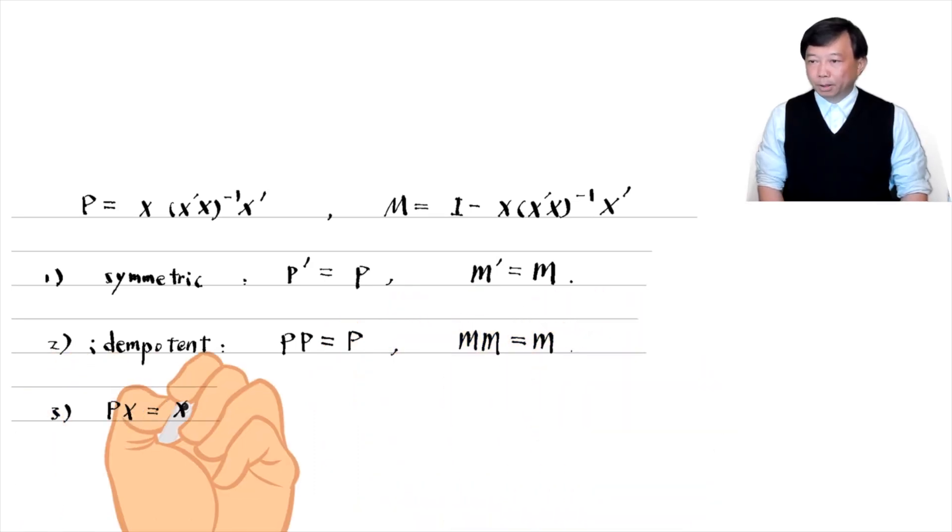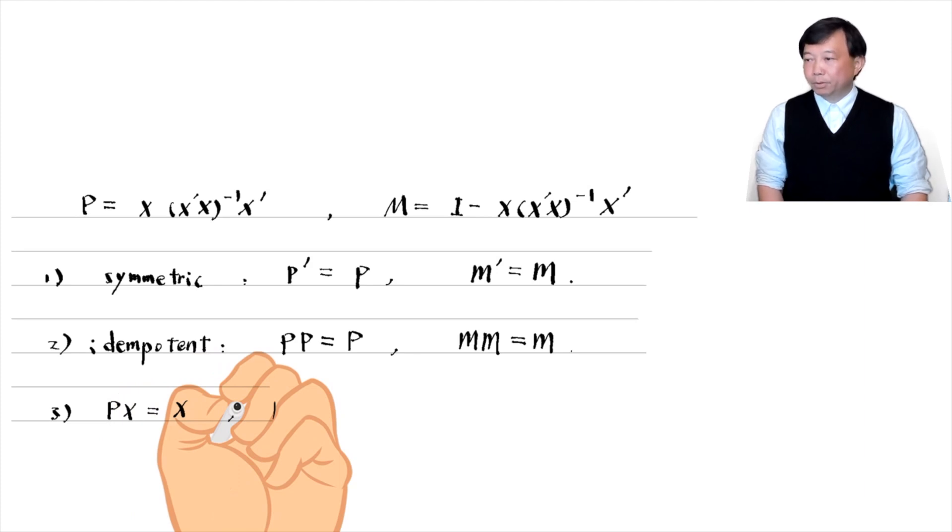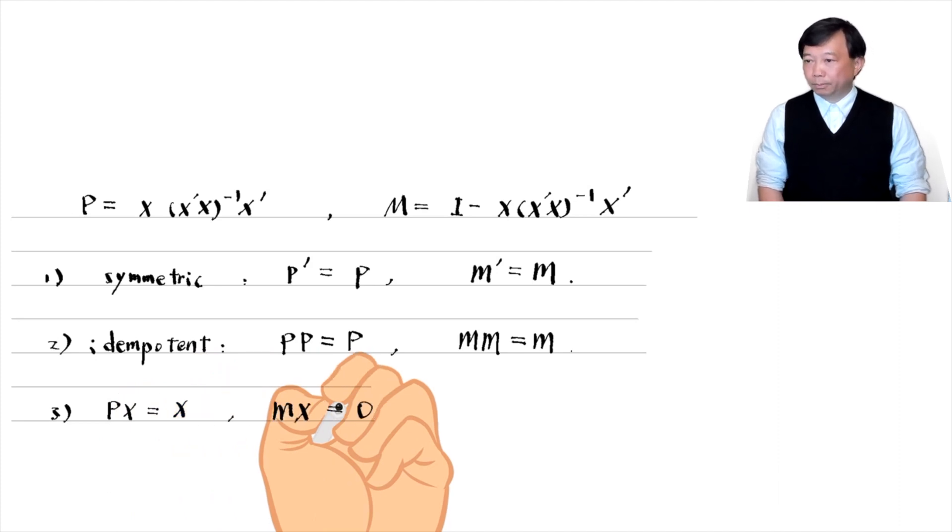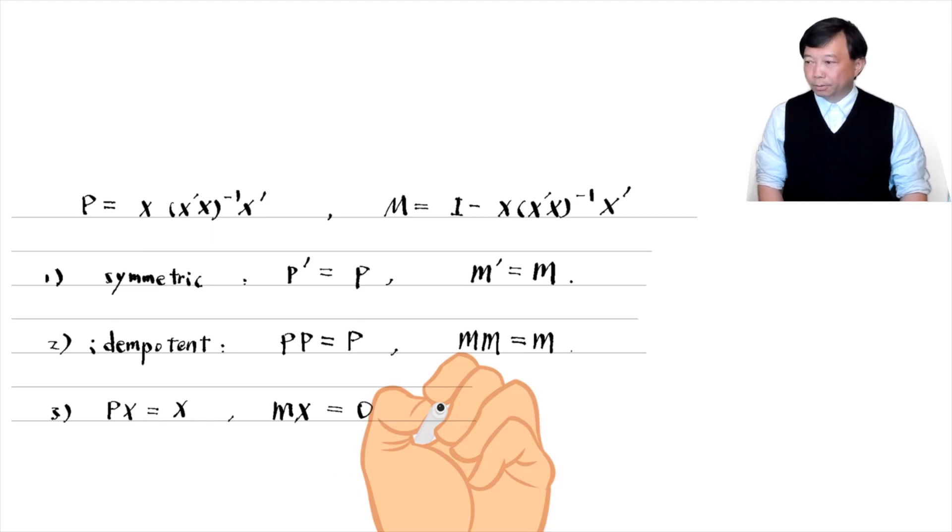Simple algebra shows that x pre multiplied by P equals x. It means the projection of x on x space is itself. x pre multiplied by M equals zero. This means the residual from the regression of x on x is zero.